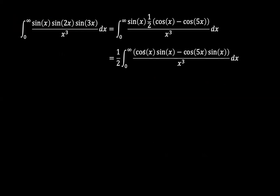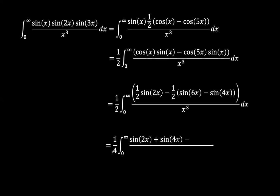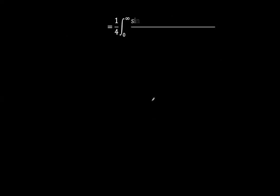Now, cos(x)·sin(x) is the same as half sin(2x). And cos(5x)·sin(x) gives the difference between sin(6x) and sin(4x). Pulling out the factors, we get a quarter times sin(2x) plus sin(4x) minus sin(6x), all over x cubed. So we now have an expression with sin(2x) over x cubed, sin(4x) over x cubed, and sin(6x) over x cubed.